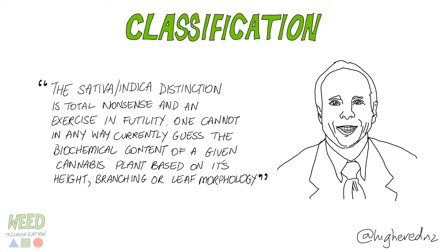And now we have another quote from Ethan Russo: 'The sativa/indica distinction is total nonsense and an exercise in futility. One cannot in any way currently guess the biochemical content of a given cannabis plant based on its height, branching, or leaf morphology.' This is saying that the whole indica/sativa debate is kind of irrelevant.